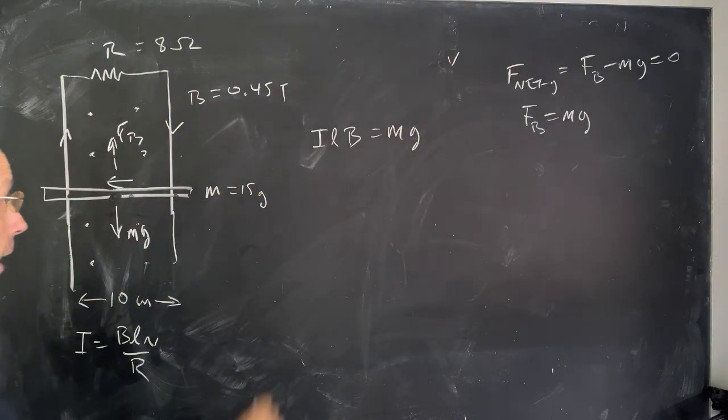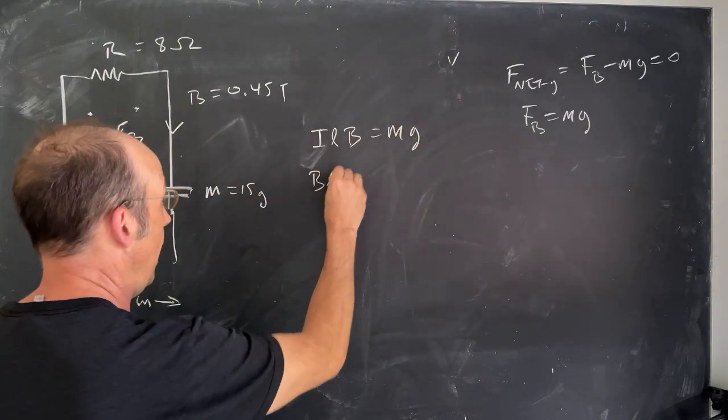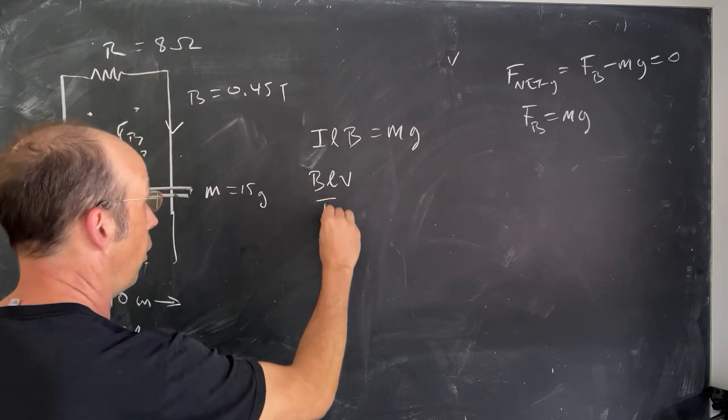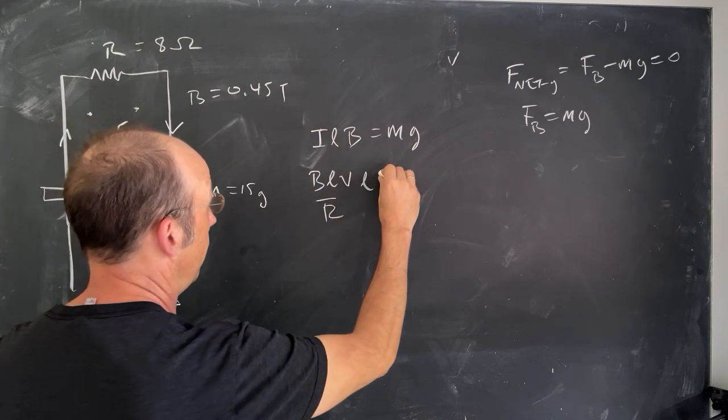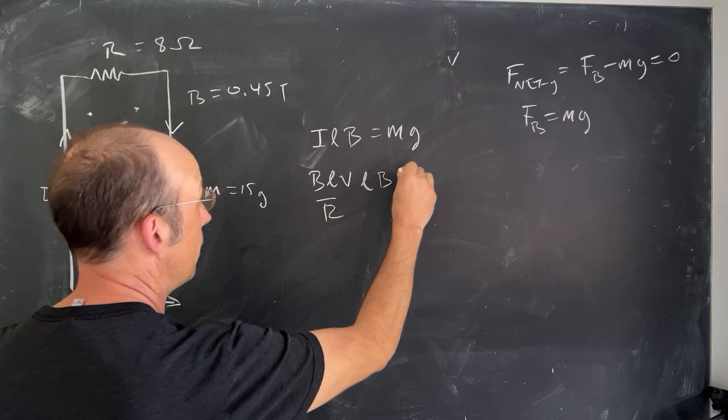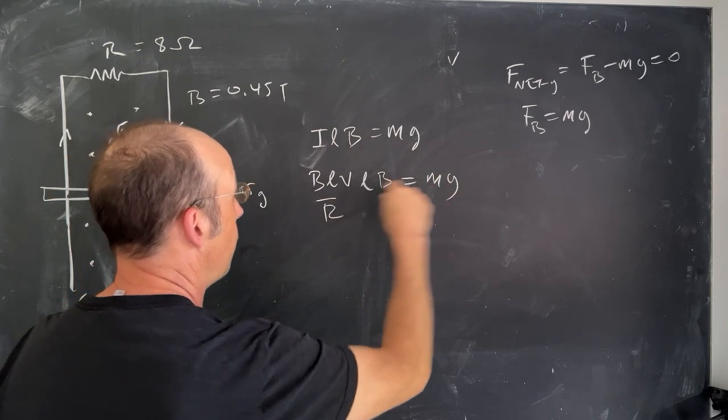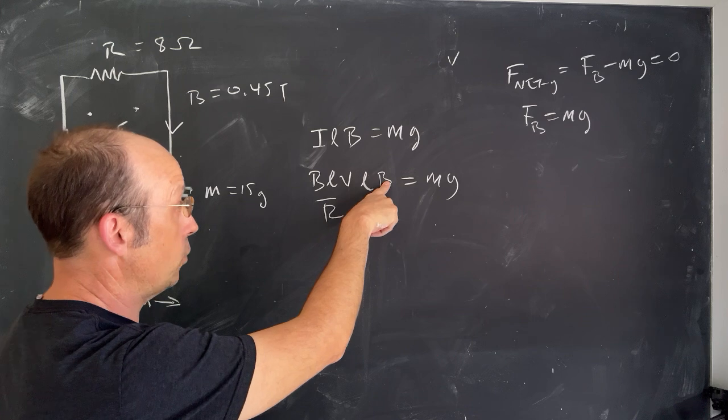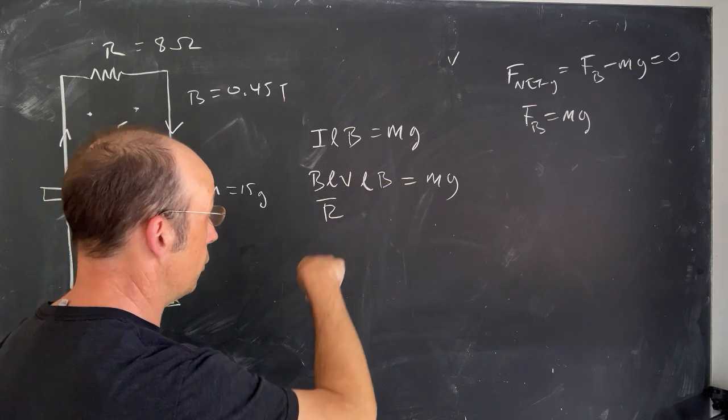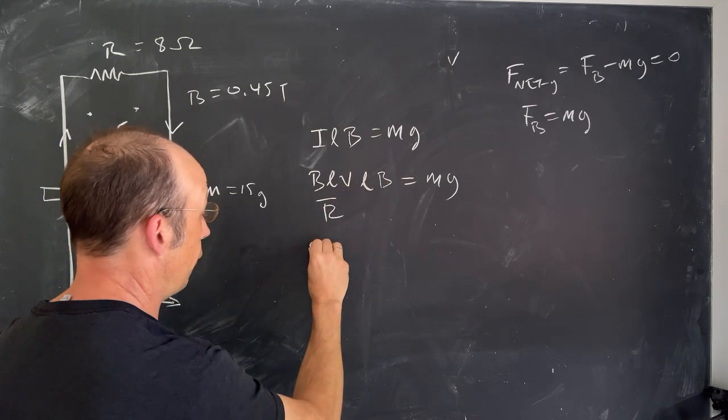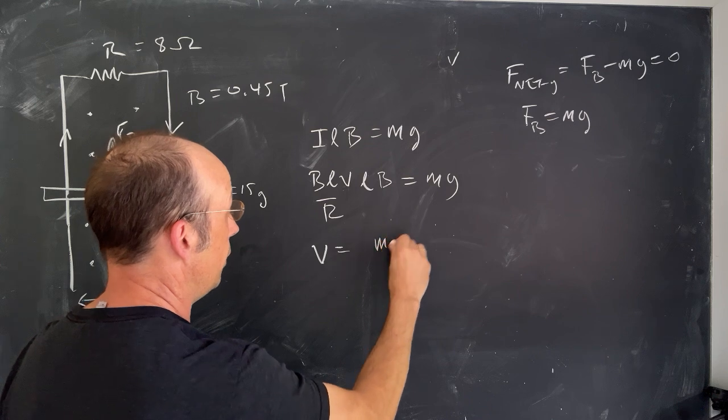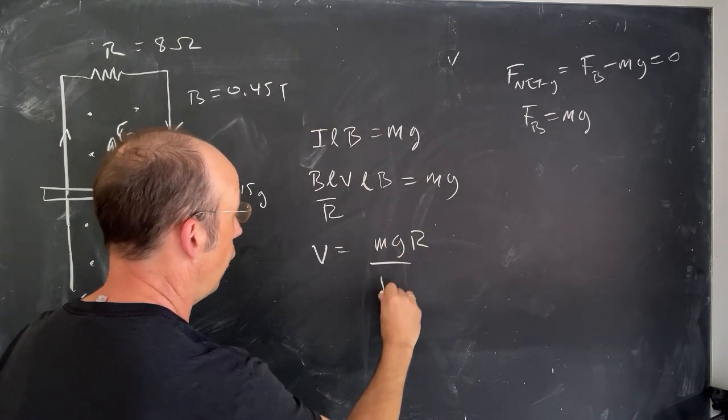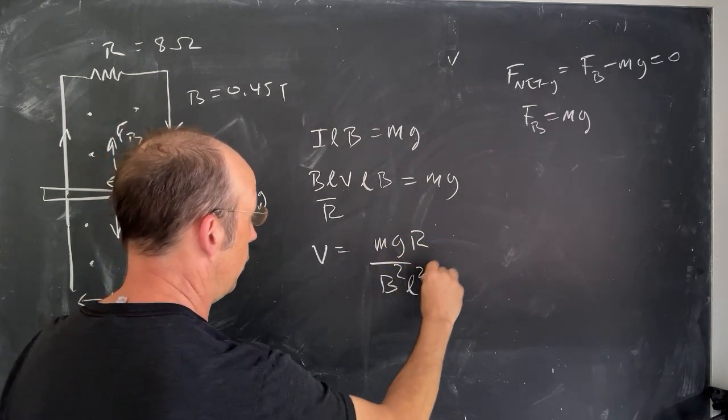And now I'm going to put in my value for I. I get BLV over R, and then I have to multiply by L and B. And I want to solve this for MG. So first of all, notice that I have two Bs, so I get B squared, and I have two Ls, so I get L squared. So if I solve this for V, I get V equals MGR over B squared L squared.